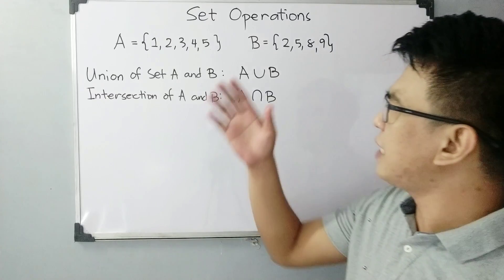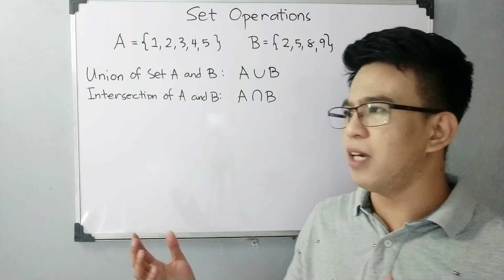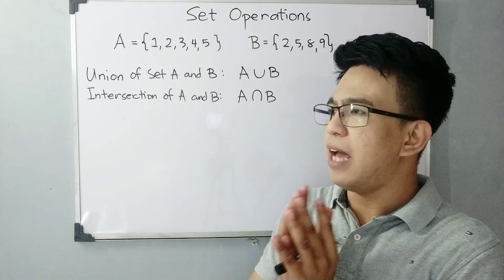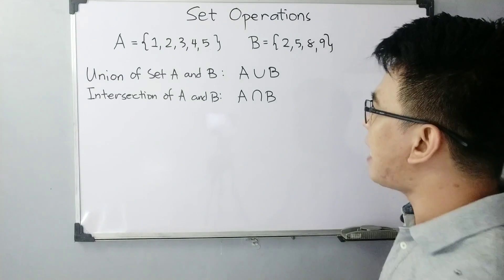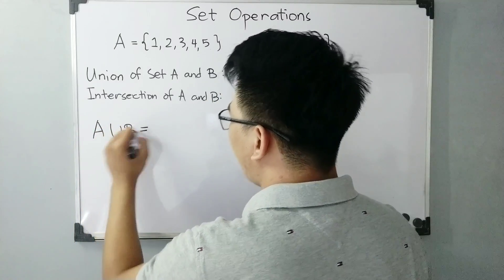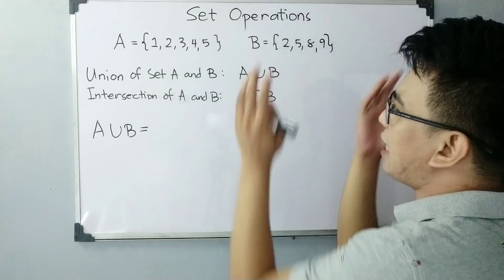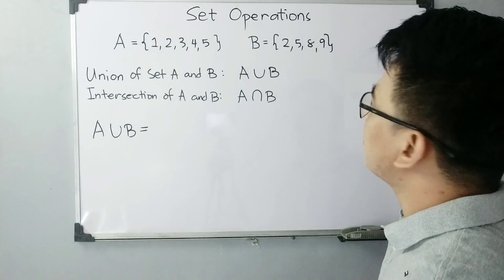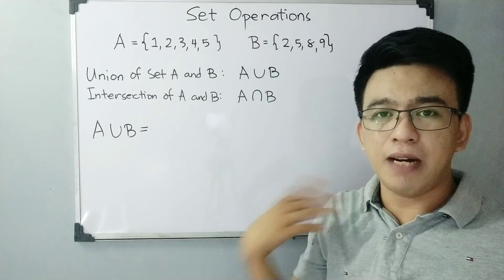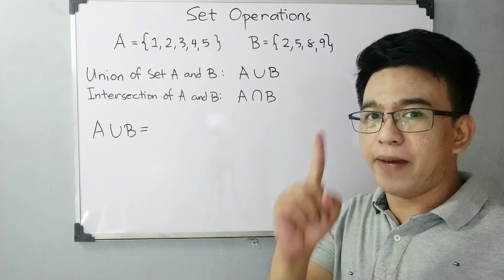So let's elaborate first what is meant by the union of set A and set B. For the union of set A and set B, it is simply combining all the joint elements of both sets. For the union of set A and set B, what we will do is combine all their elements. Now, the question is: 2 and 5 appear in both sets — is that okay? Yes, it's okay, but when you write it, you write it only once.